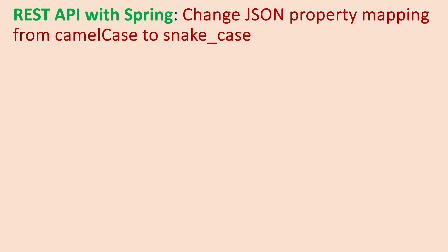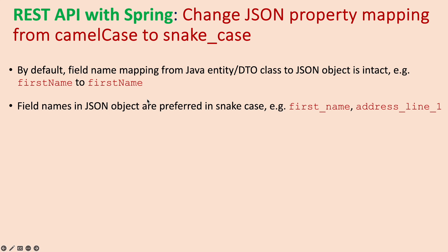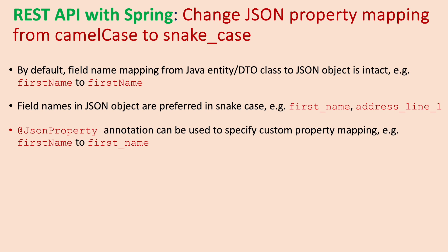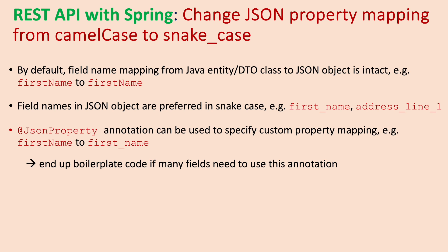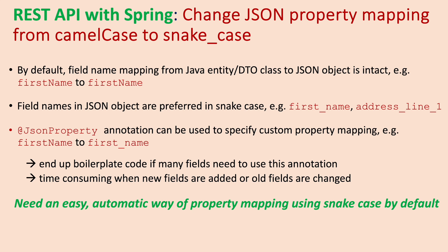By default, field name mapping from a Java entity or DTO class to a JSON object is intact — for example, 'firstName' maps to 'firstName'. But field names in JSON objects are often preferred in snake case, for example 'first_name' or 'address_line_one'. In a Spring project using the Jackson library we can use the @JsonProperty annotation to specify custom property mapping, for example 'firstName' to 'first_name'. However, using this annotation results in boilerplate code if many fields need it, and it is time consuming when new fields are added or old fields are changed. So we need an easy, automatic way of property mapping using snake case by default.